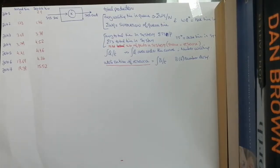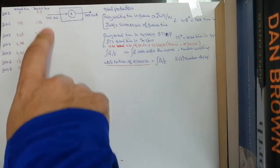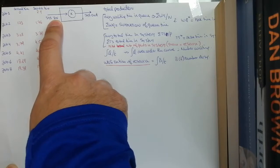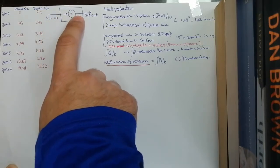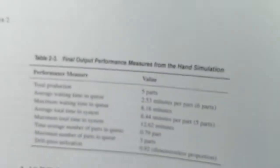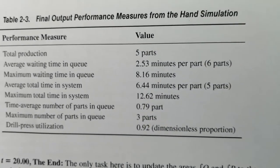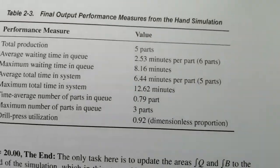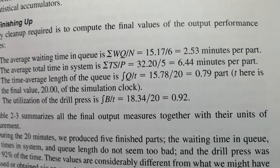Today I'm going to show you how to do simulation by hand. We have seven jobs, we have the arrival time and the service time of each one of them, and we have a single input, single server system. By the end of this video, you should be able to find the total production, average waiting time in queue, maximum waiting time in queue, and drill press utilization.